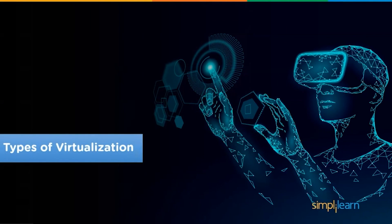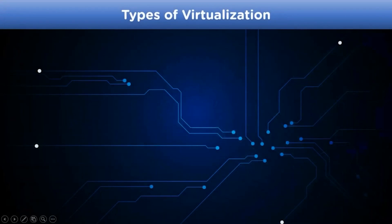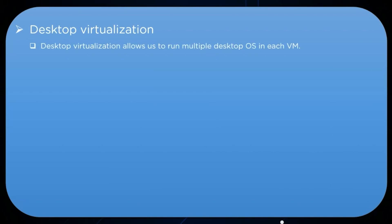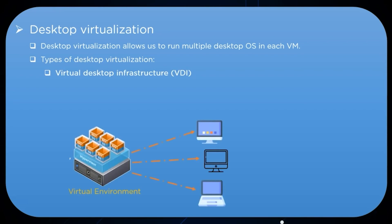There are four types of virtualization: desktop virtualization, network virtualization, storage virtualization, and application virtualization. In desktop virtualization, multiple operating systems can run on a single hardware system. The first type is Virtual Desktop Infrastructure (VDI), which runs numerous virtual machines on a central server and hosts them to users on demand — allowing access to any OS without physically installing it. The second is local desktop virtualization, which uses a hypervisor on a local system to run multiple operating systems simultaneously without affecting the host OS.